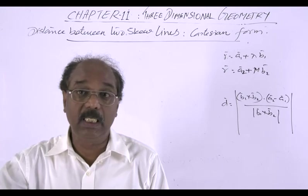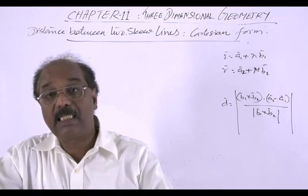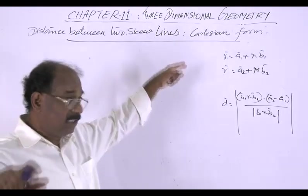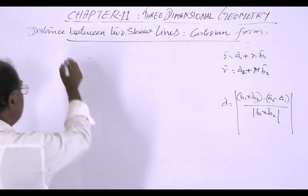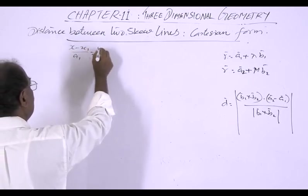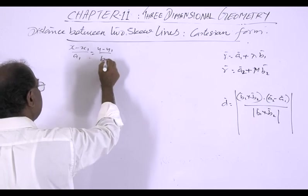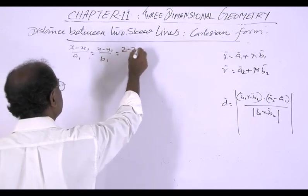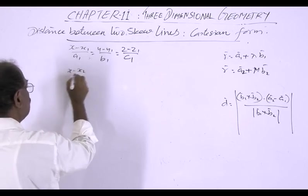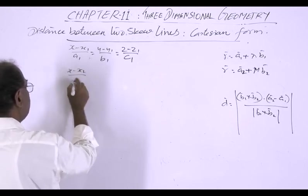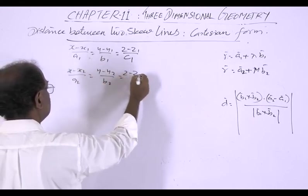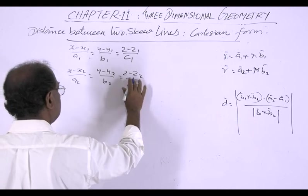And correspondingly consider the Cartesian equation of the two lines. The Cartesian equation of these two lines will take the form. So first, x minus x1 by a1 equal to y minus y1 by b1 equal to z minus z1 by c1, and x minus x2 by a2 equal to y minus y2 by b2 equal to z minus z2 by c2.